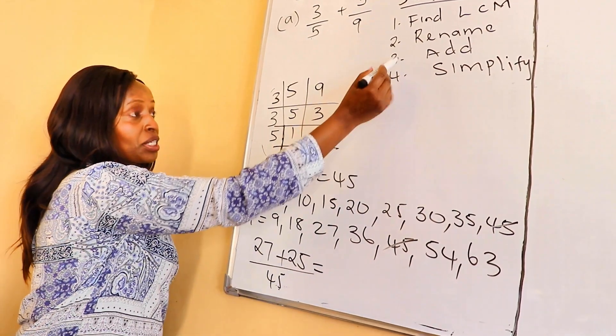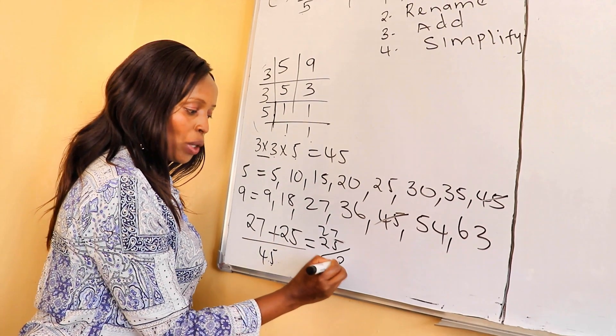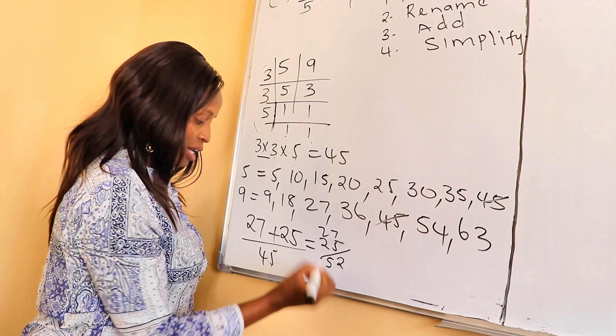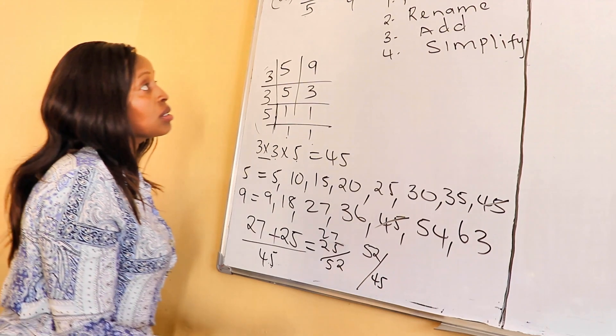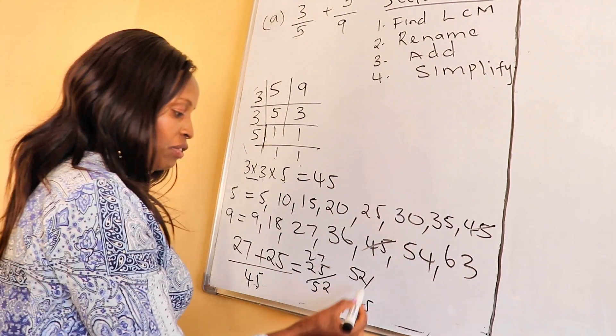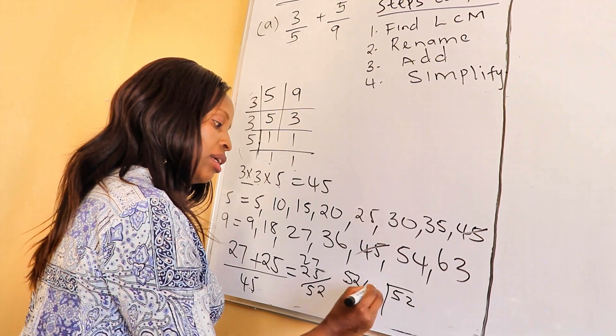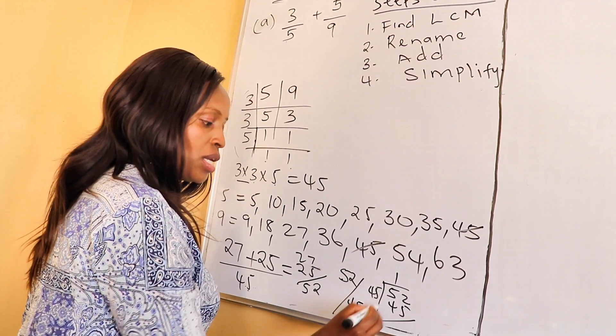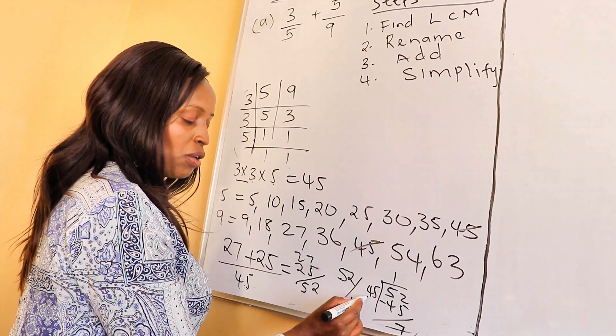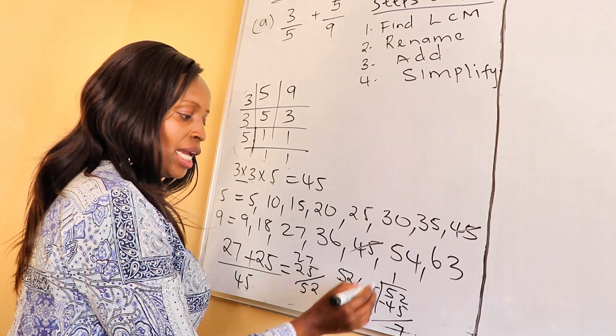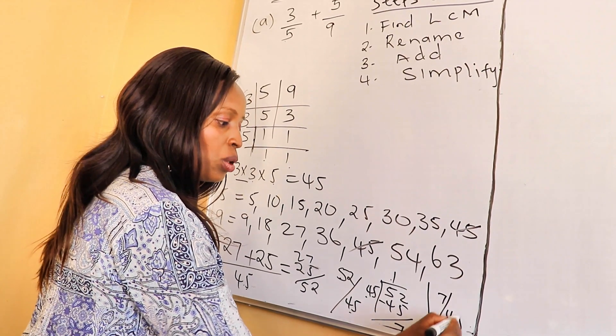After that, we apply step 3. You add 27 plus 25, you get 52 divided by 45. So, 52 divided by 45. How many 45s are there? It's 1. So, 52 minus 45 is 7. 7 cannot be divided by 45, so it remains. And now, 1 is our whole number and 7 over 45 is the fraction part.